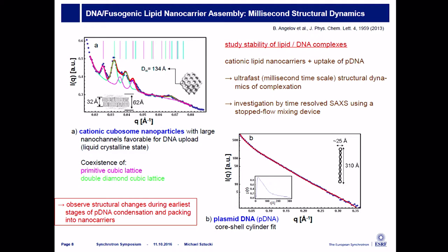A first example in this respect is a drug vector study. It is very important to look at the first millisecond — how the dynamic processes are happening, how the product is fixed into the matrix. In this study it's a DNA–lipid carrier assembly. It's always good to look first at the constituents. The matrix intended to store the plasmid DNA consists of catanionic cubicsome nanoparticles. When you do a scattering image of this sample, you see characteristic peaks representative of a liquid crystalline state with a cubic lattice. When you look at the plasmid DNA, you have a scattering pattern that can be fitted with a core-shell cylinder shape, representative of the linear DNA strand.